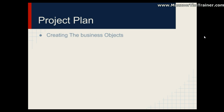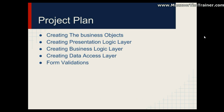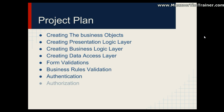Then we will go for creating the solution and adding projects to it. Then we will go for creating business objects, the presentation layer, business logic layer, and data access layer. Then we will see form validations, add business rule validations, go for authentication, and then authorization. Finally, we will publish this project and bring it live.